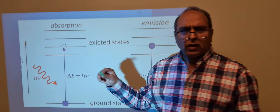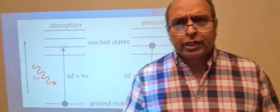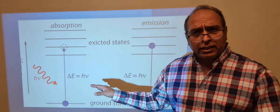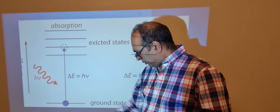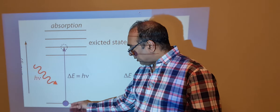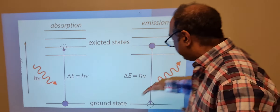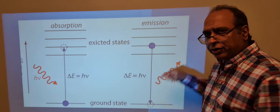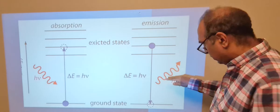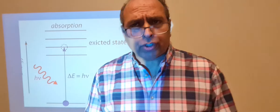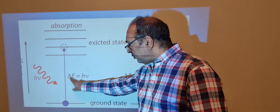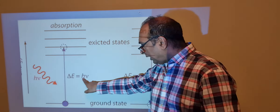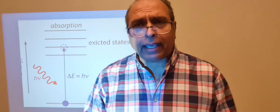Light can come in and electrons can pick up the light, changing from ground state to excited states. If the opposite happens and electrons drop down, they give off the extra energy as light. The photons given out can be quantified by frequency using the equation: the change in energy equals Planck's constant times the frequency of the light given out.